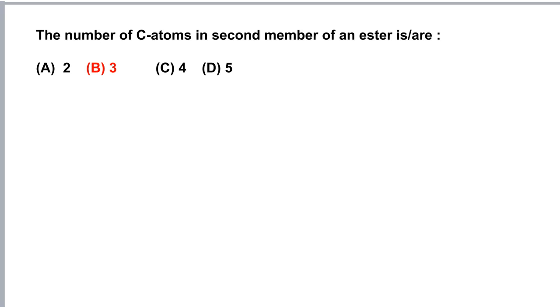In this question we have to find the number of carbon atoms in the second member of an ester. The simplest ester has two carbons. We can form an ester by using the simplest acid and simplest alcohol.